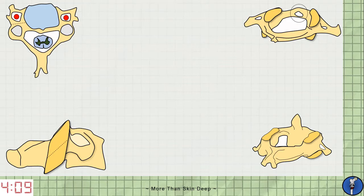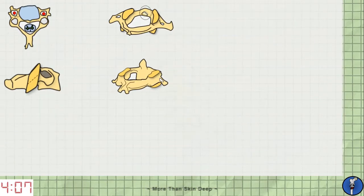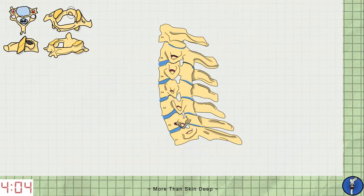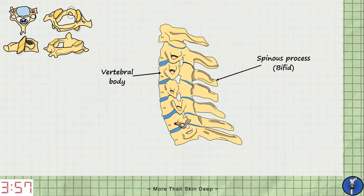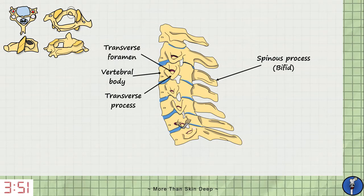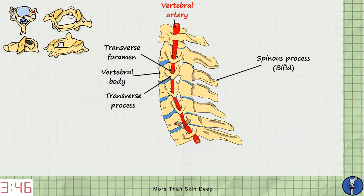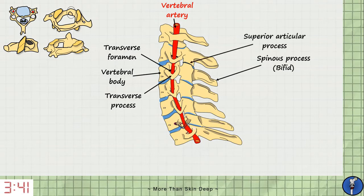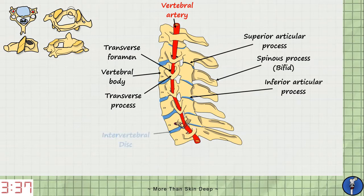Here's a diagram of the C1 to C7 vertebrae arranged as they sit in the body. To orient ourselves, recall that each vertebra has a vertebral body anteriorly, a spinous process posteriorly — which in cervical vertebrae is bifid — and a transverse process which encloses the transverse foramen. A key structure running inside the transverse foramen is the vertebral artery, which will produce the basilar artery in the neurocranium. To articulate with one another, the vertebrae have two superior and two inferior articular processes. There is a fibrocartilaginous body known as the intervertebral disc between each vertebral body.